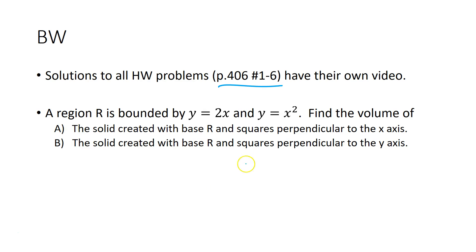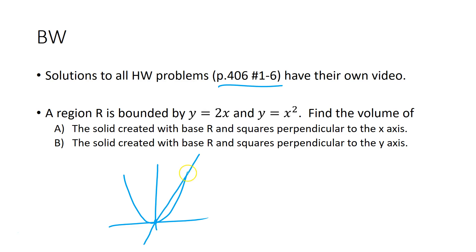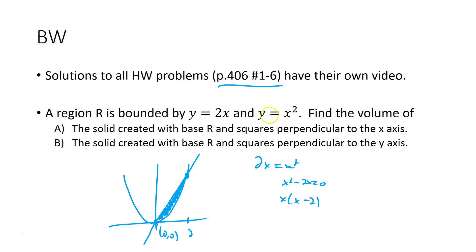Region R is bounded by y equals 2x and y equals x squared. x squared looks like a parabola; 2x is steep with a slope of 2. So this is our region R. Let's find the intersection points: (0, 0) for sure. Setting 2x equal to x squared gives x squared minus 2x equals 0, so x(x−2)=0, meaning x equals 2. Plugging in gives y equals 4, so the other intersection point is (2, 4).